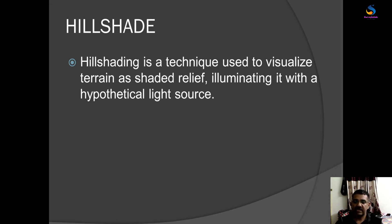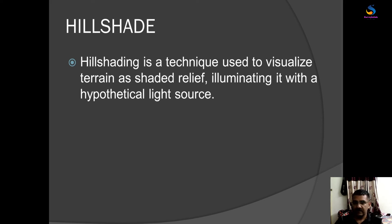Now you can easily understand the difference between slope and aspect. Slope is the inclination from a surface to a point, and aspect is the direction of the slope measured from 0 to 360 degrees. If we turn around at a location from 0 to 360 degrees, moving 90 degrees clockwise brings us to east, another 90 degrees to south, another 90 degrees to west, and another 90 degrees brings us back to north.